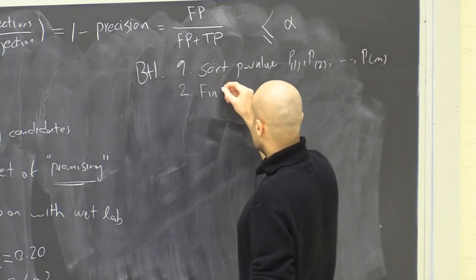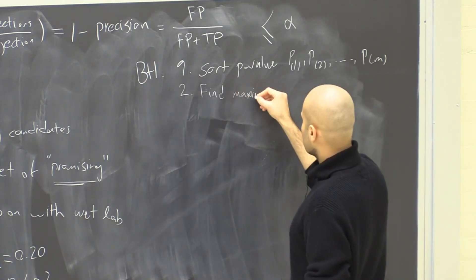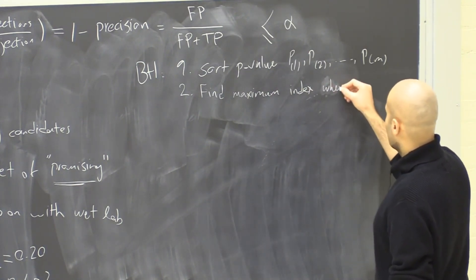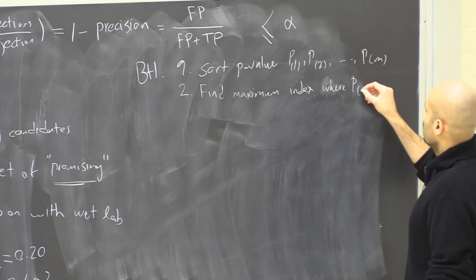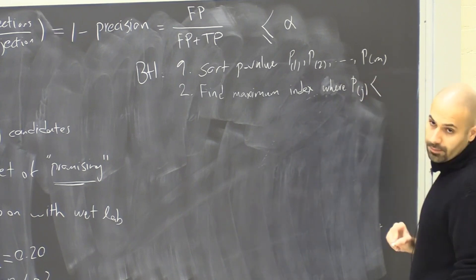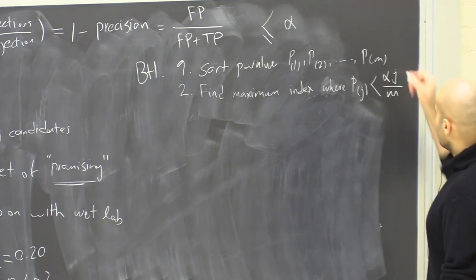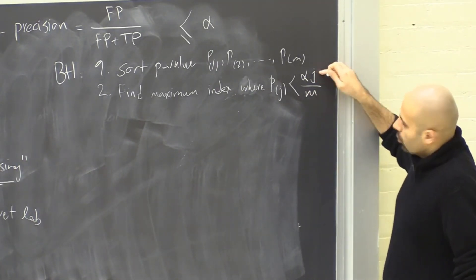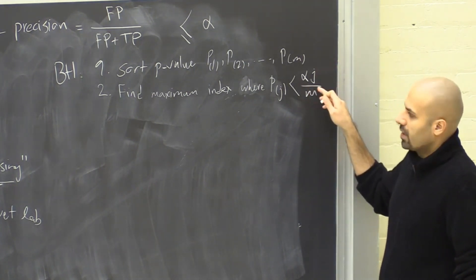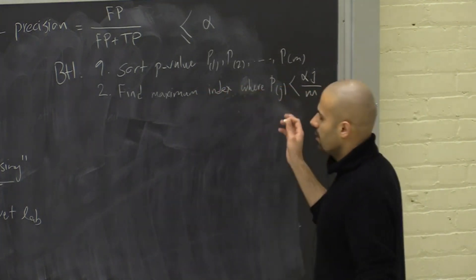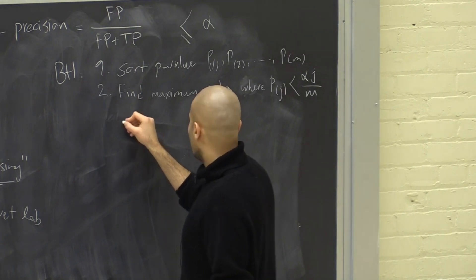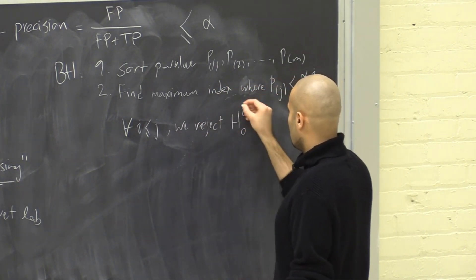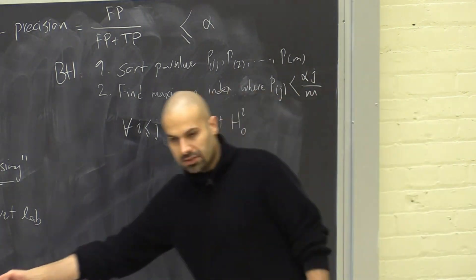Now that they are sorted, we're going to find maximum index in here for which the p-value, let's say p sub j, is still less than alpha over M times j. Very similar to the previous idea. Now instead of decrementing the denominator, we're multiplying j to the numerator. So again, we start with something like alpha over M, because j is 1 at the beginning of the process. And then when you find this index, for all indices i less than or equal to j, we reject H0 superscript i.